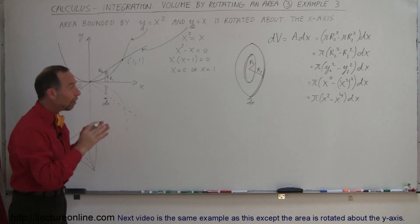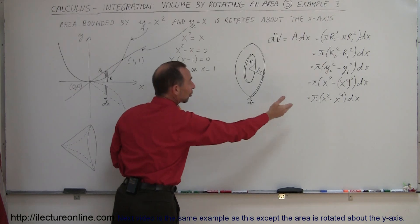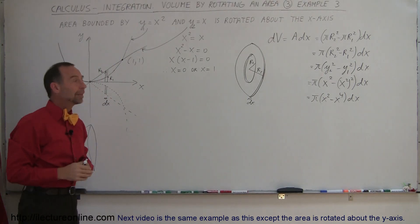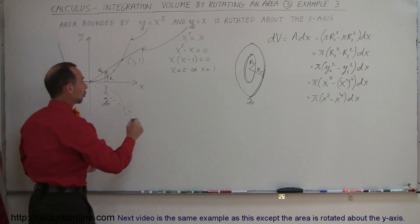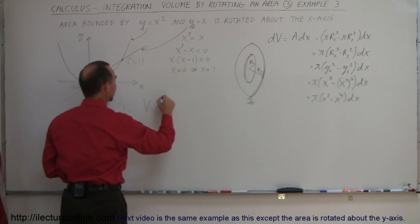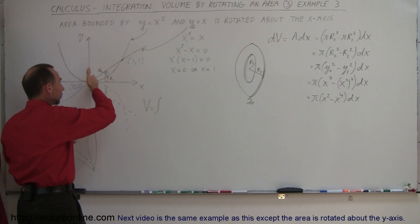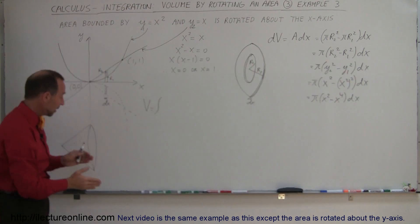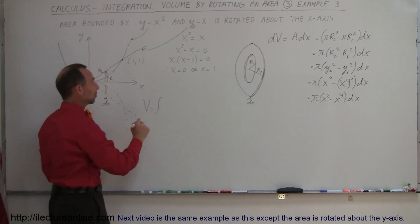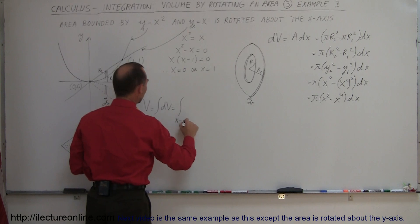Now we have to replace y1 and y2 by what they are in terms of the x variable. So y1 is x squared and y2 is x. This equals π times (x squared minus x to the fourth) dx. Now we have our small dv, our small volume element, this little washer, expressed in terms of the x variable, and we're now able to integrate that. So we can find the total volume.